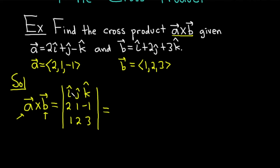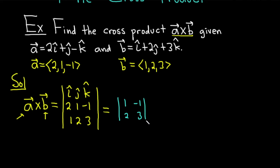You cross out the first row and the first column, and you're left with 1, negative 1, 2, 3. You take the determinant of that — so 1, negative 1, 2, 3 — and write the i-hat. The pattern is plus, minus, plus. The first one is a plus. Now you go to minus for the next piece.